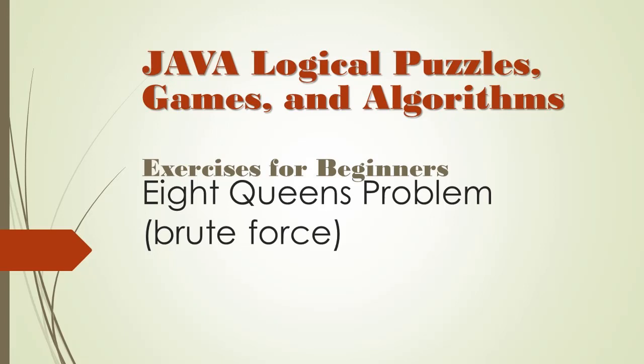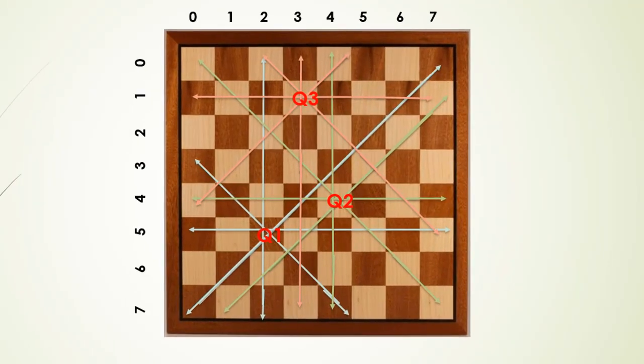In case you are not familiar with the chess rules, here's the quick scope. Every queen can move horizontally, both left and right, and vertically, both up and down.